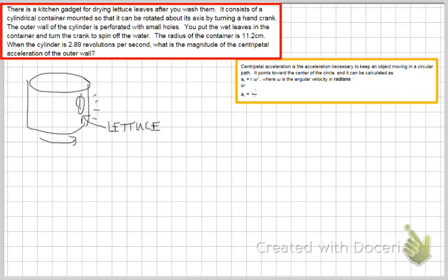When we start spinning, everything wants to continue in a straight line, but because it's up against the wall, the lettuce is turned in that circular path where it lies up against the wall. The water is small enough that it flies out and is then contained by an outside container.